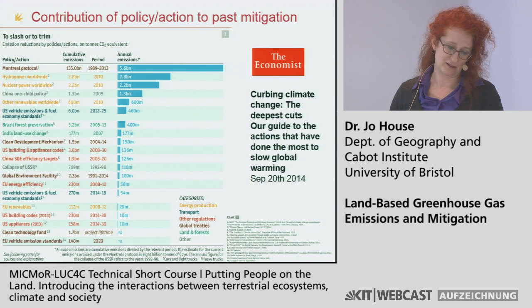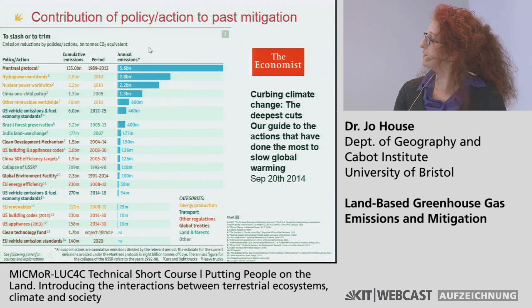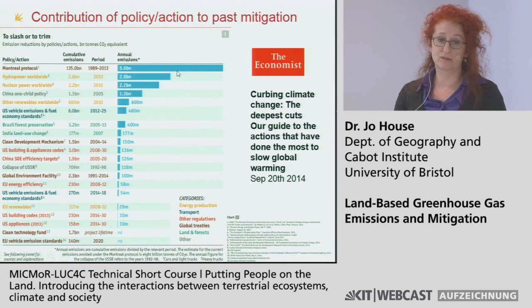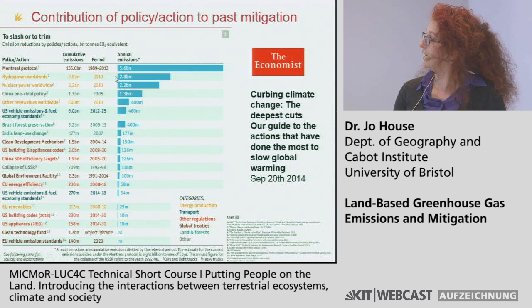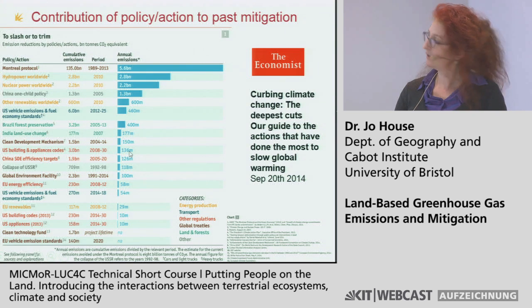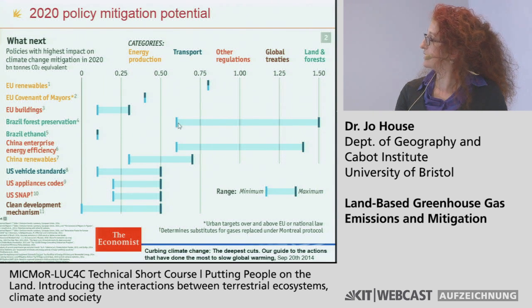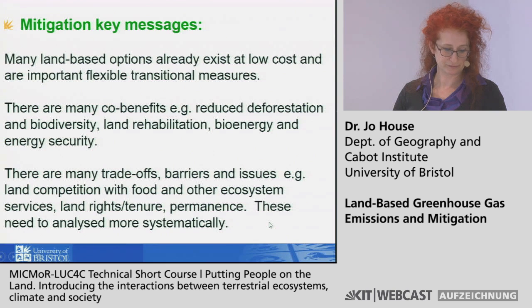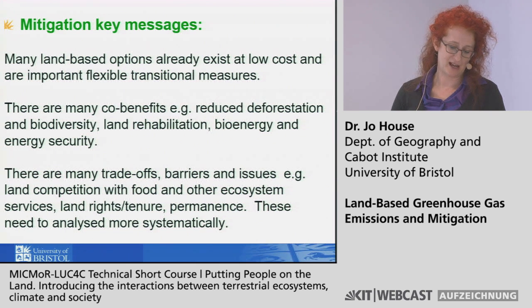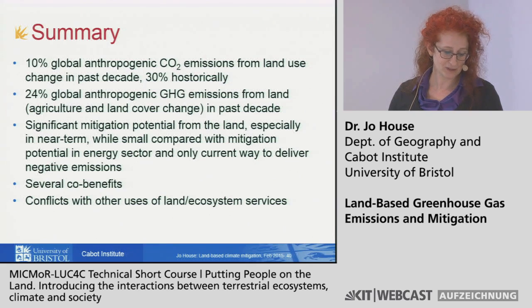Policies that have happened in the past and their contribution to emissions reduction include the Montreal Protocol on CFCs (which are greenhouse gases), hydropower, nuclear power, Brazil forest preservation, and Indian afforestation. Looking into the future, there's quite a big potential contribution from avoided deforestation in Brazil and Brazil ethanol. My key messages on mitigation are: there are many options that already exist, with many co-benefits, but also trade-offs and barriers and issues, which Mark went through and Anna will cover in more detail.